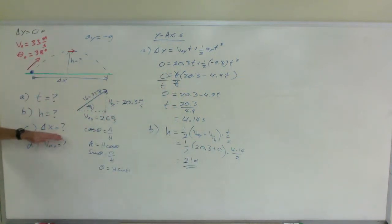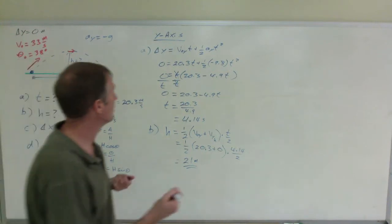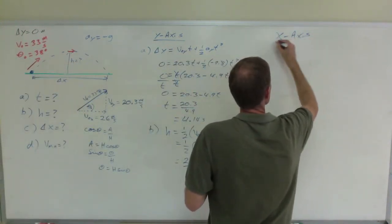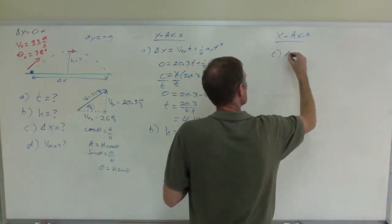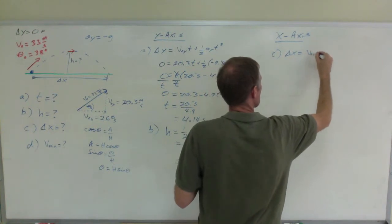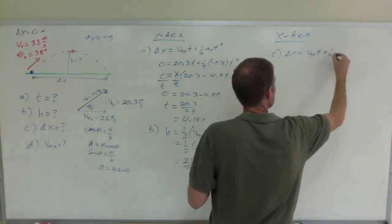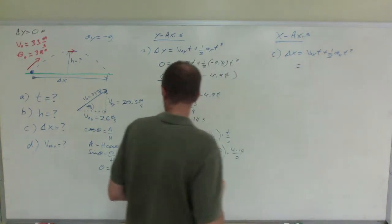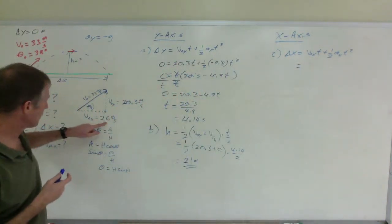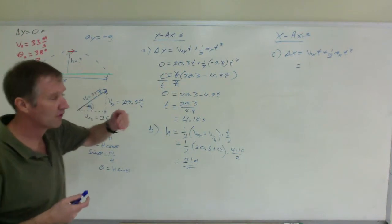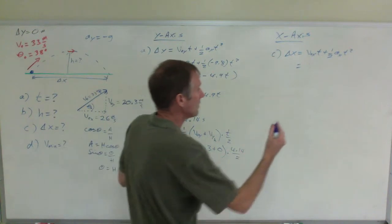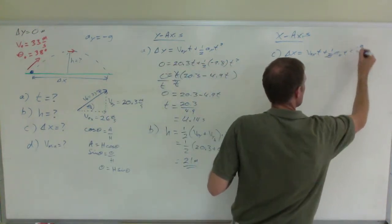To find the range, the range is in the x-axis. So, for part c, delta x equals v sub 0 x times t plus 1 half A x t squared. Well, v sub 0 x is 26. For every moment it is in the air, it travels 26 meters horizontally, and that does not change. Remember, there is no acceleration in the x-axis.